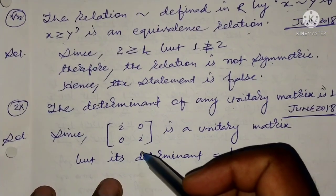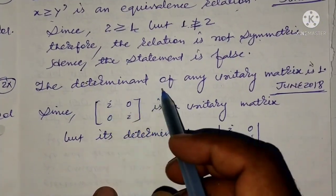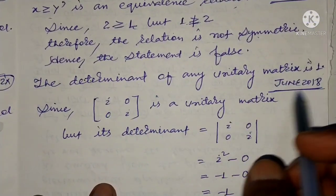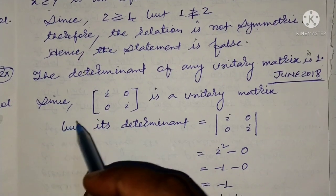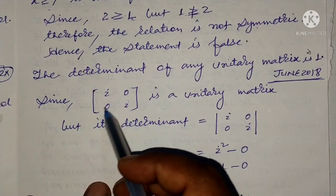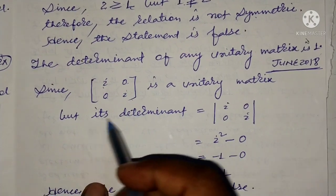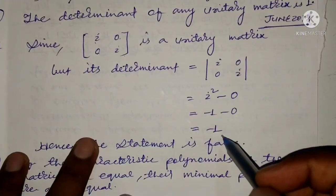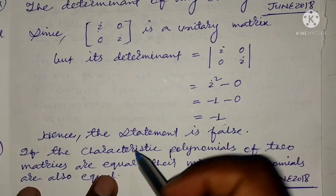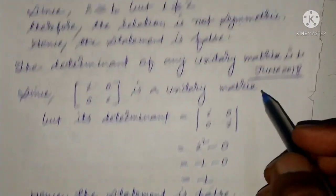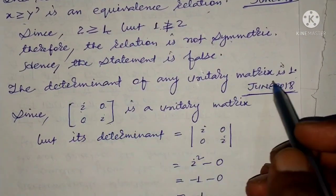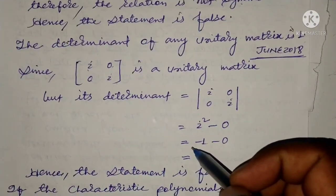The determinant of any unitary matrix is 1. We can take a unitary matrix, for example a diagonal matrix with entry i. The determinant of this is i, not 1. Hence the statement is false. A unitary matrix can have determinant +1, -1, i, etc.